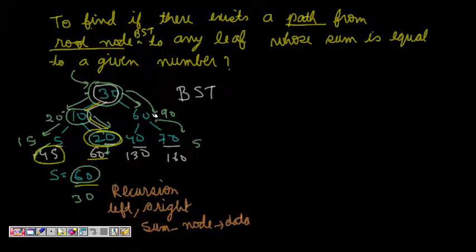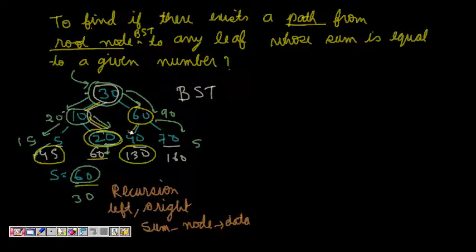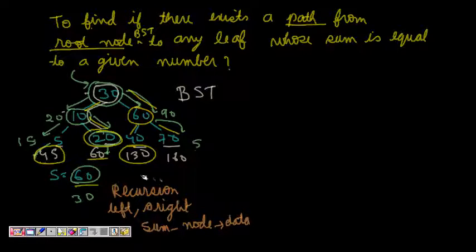If we go from 30 to the right it is 60, then to 40 on the left, so we have 60 plus 30 plus 40 which is 130. We hit the leaf node, and similarly the sum on another path is 160.